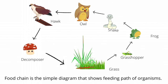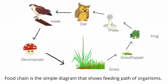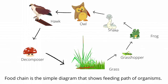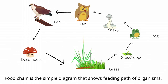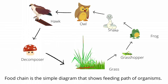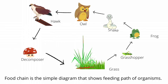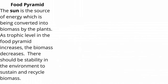A food chain is a simple diagram that shows the feeding path of organisms. A food web is the interconnection of food chains. In this interrelationship, several consumers may eat the same organism, or consumers may have a choice of several organisms to consume.